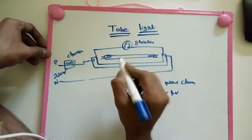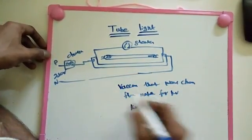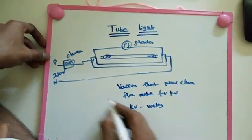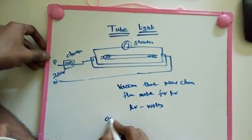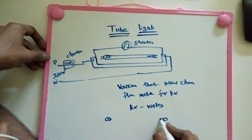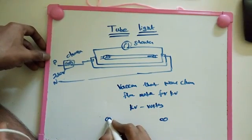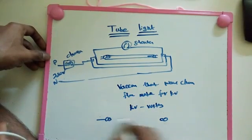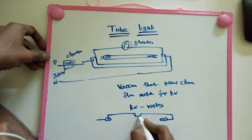We have the anode and cathode available inside of tube light. So now we are giving temporary connection by using starter here.